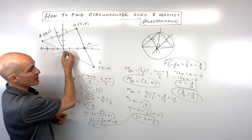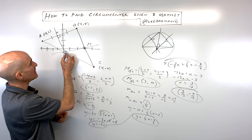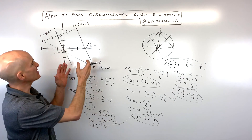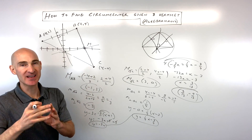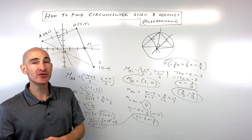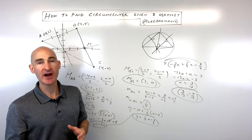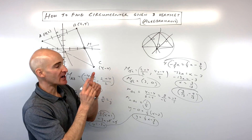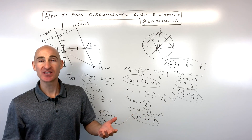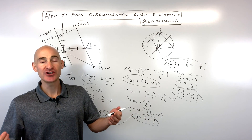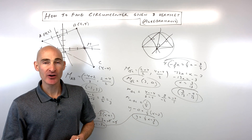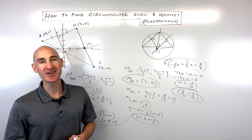Let's see if that's accurate on the diagram — three thirteenths, negative nine thirteenths. Pretty close. That's how you would do it algebraically. If you want to see how to do this using constructions with a compass, protractor, and straight edge, check out the other video. If you like the way I teach and you're interested in learning more about algebra, geometry, algebra 2, pre-calculus, ACT math, or SAT math, check out more videos on my Mario's Math Tutoring YouTube channel.